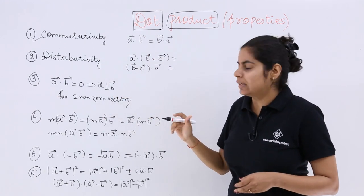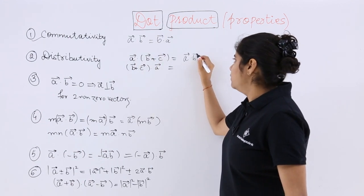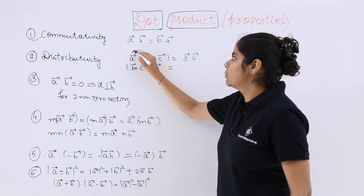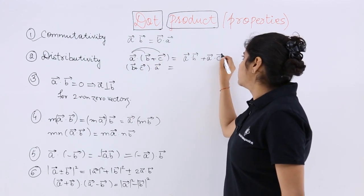A vector dot (B plus C) vector. That means you can separate it as A vector dot B vector, as you do in algebra, and then plus A vector dot C vector. How difficult is it?